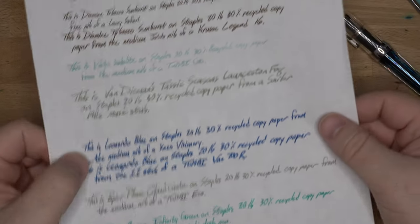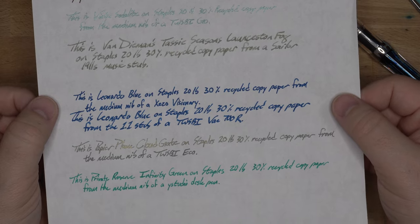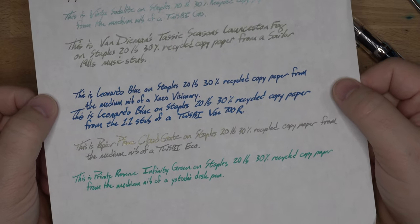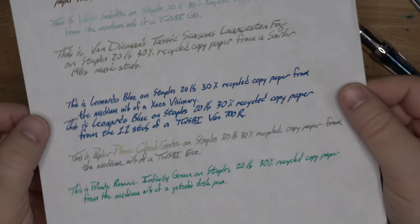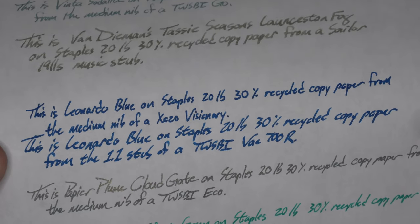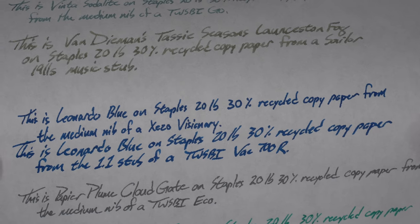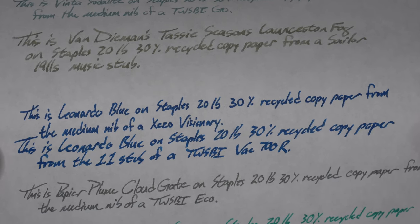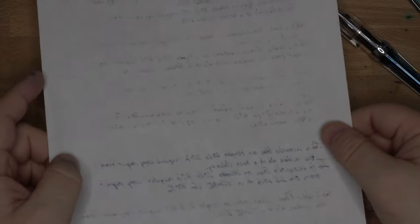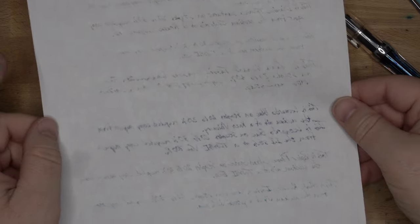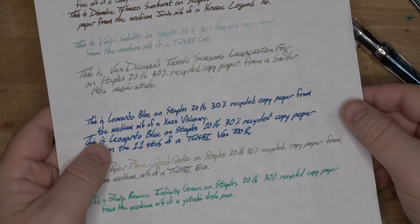For papers, here we have our 20-pound, 30-percent recycled copy paper from Staples. And this is the very worst paper you're going to have in your office copier or whatever. You can see that there's not much in the way of feathering here, although there is a little bit here and there. You do have a fair amount of bleed-through on the back. This is bad paper, and you can see pretty much everything bled through at least a little bit. It's not awful on here, but it's also not great.